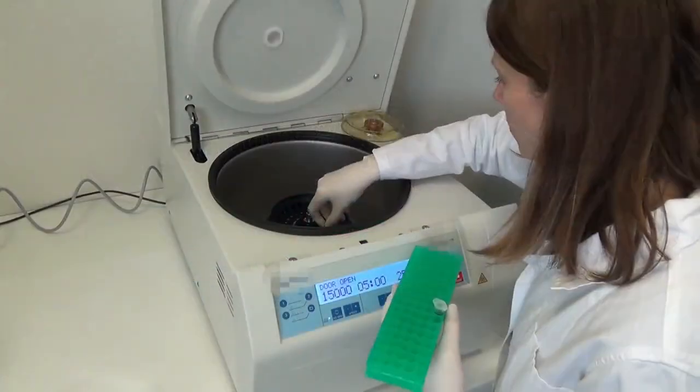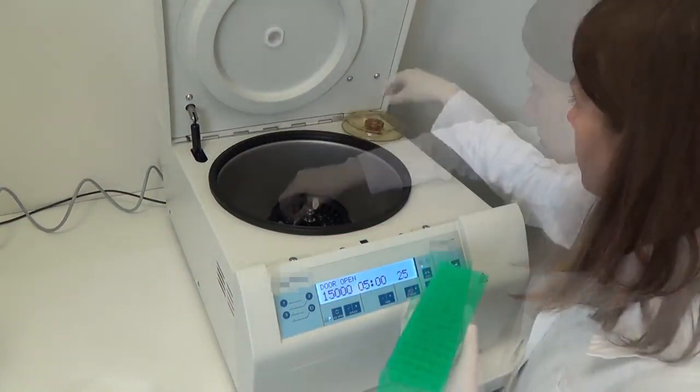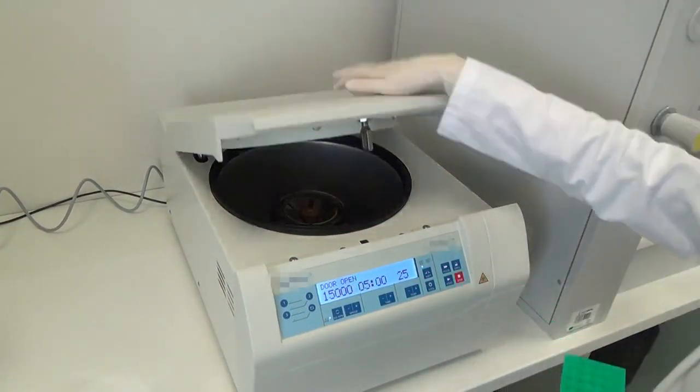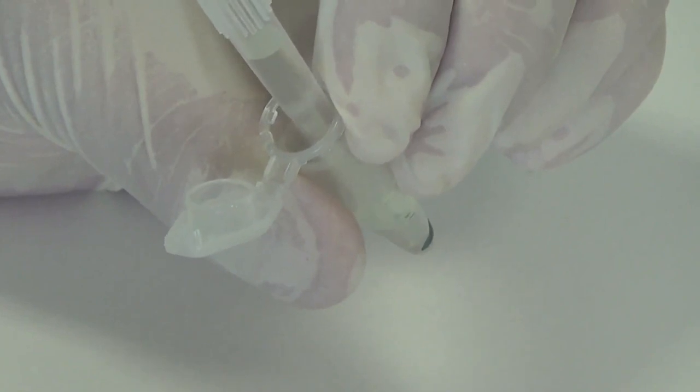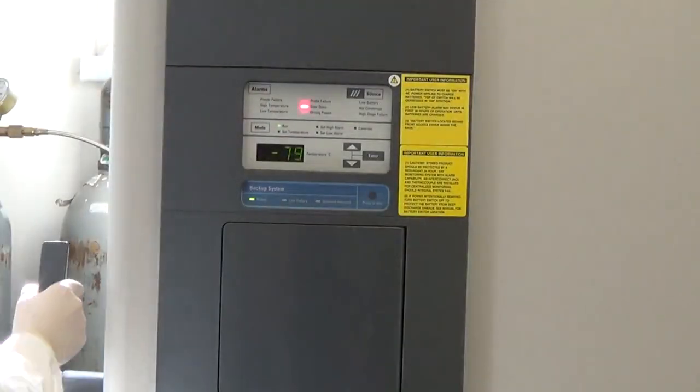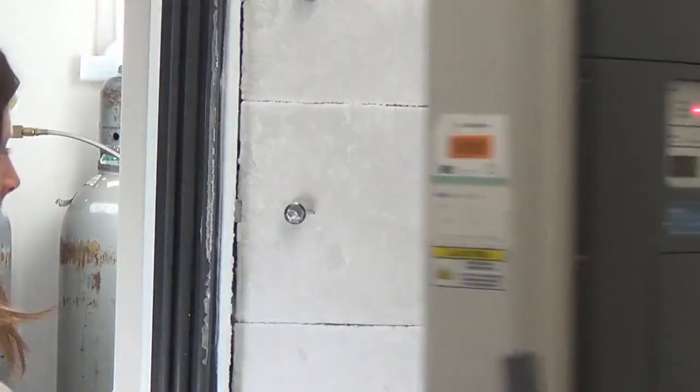Centrifuge the cells at 15,000 g at laboratory temperature for 5 minutes. Carefully discard the supernatant, being sure not to disturb the pellet. Put the samples in the freezer. For long-term storage, keep the samples at minus 80 degrees Celsius.